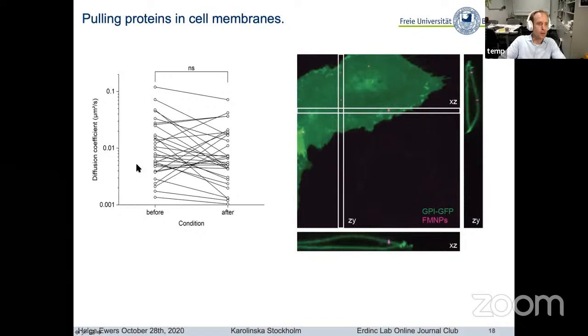When we then quantified the difference in diffusion coefficient of many particles and many cells before and after, we could see that globally speaking, there's no difference in particle diffusion before and after they were pulled. So it doesn't seem that we introduce any major effects just by pulling them a little bit through the membrane. This is a freely diffusing, normally behaving membrane molecule before you pull it, then you pull it through the membrane, and it can just resume its lateral motion again.